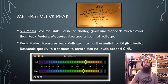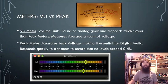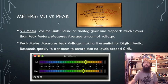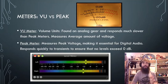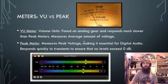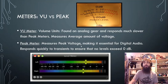Within most consoles you'll find meters. There are two different types. VU meters — VU stands for volume units — are found on most analog gear and respond much slower than peak meters. They measure the average amount of voltage, giving you a general idea of your signal level rather than an extremely precise reading.